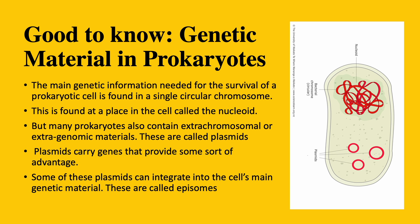The main genetic information that a prokaryotic cell needs to survive is found in its single circular chromosome at a region called the nucleoid. Prokaryotic cells do not have a nucleus, so the nucleoid is just a region in the cell where the circular DNA is found. However, many prokaryotic cells also contain extra-chromosomal or extra-genomic materials called plasmids. Plasmids carry genes that provide some advantage to the cell — such as antibiotic resistance, increased pathogenicity, or the ability to produce specific toxins — though they are not necessary for survival. Some plasmids can also integrate into the cell's main genetic material; these are called episomes.